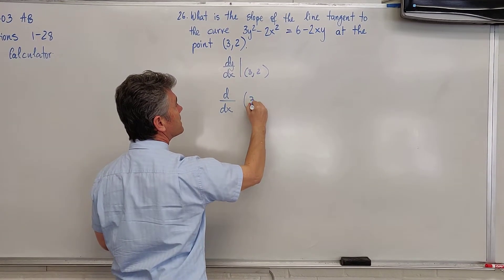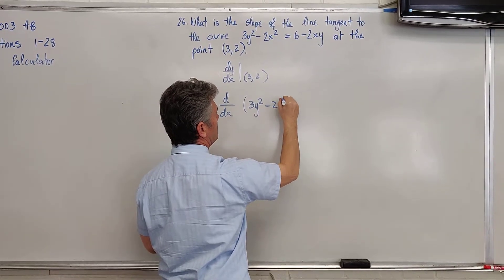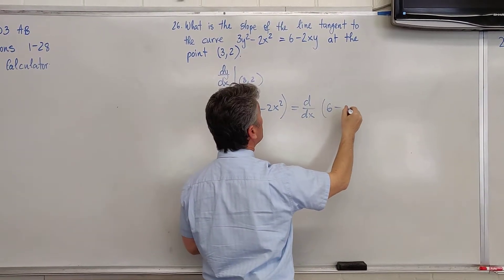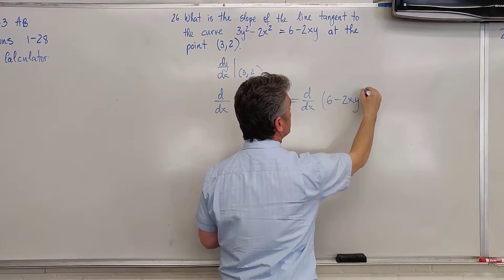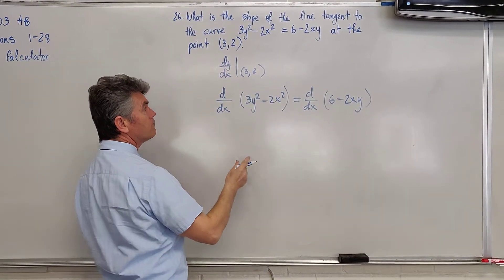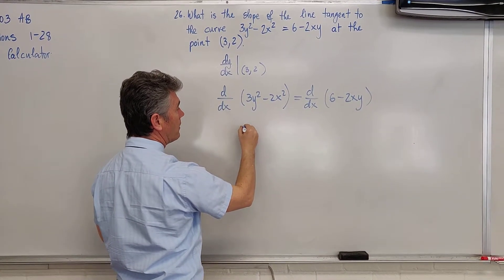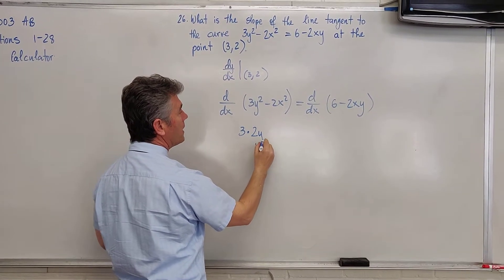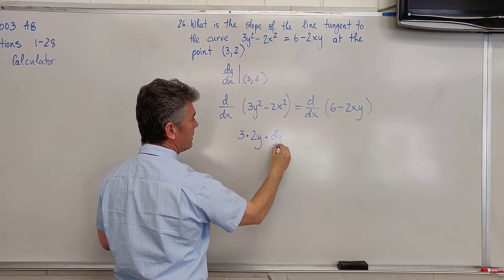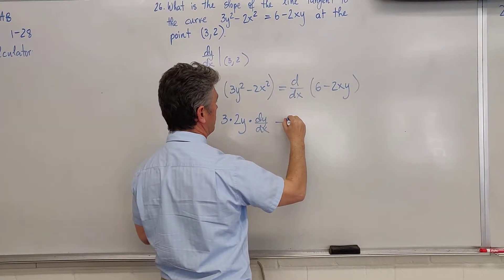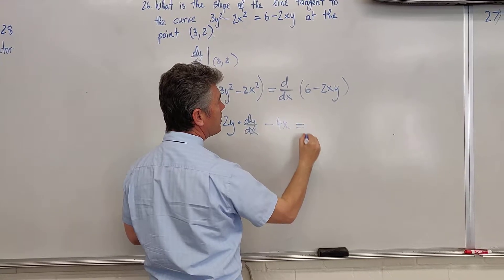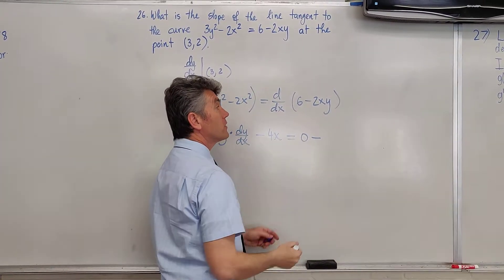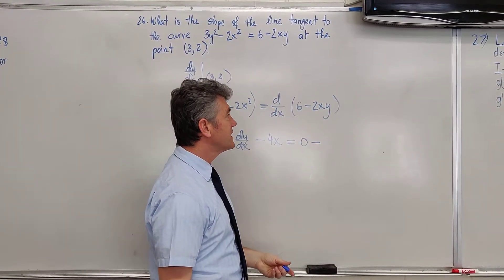We are going to take the derivative with respect to x of the left side and of course the right side. So we have the derivative with respect to x of 6 minus 2xy. The derivative with respect to x of 3y squared is 6y times dy/dx. The result is 6y dy/dx minus 4x, and the derivative of the right side is equal to 0, minus the derivative of 2xy, where we use the product rule.